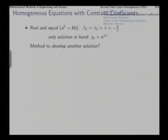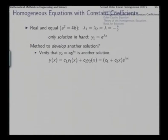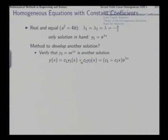We verify that x·e^(λx) is another solution and that it is linearly independent from e^(λx) because the ratio of the two solutions y₁ and y₂ is x, which is not constant. So we can construct two linearly independent solutions and then get the general solution as a linear combination c₁·e^(λx) + c₂·x·e^(λx).